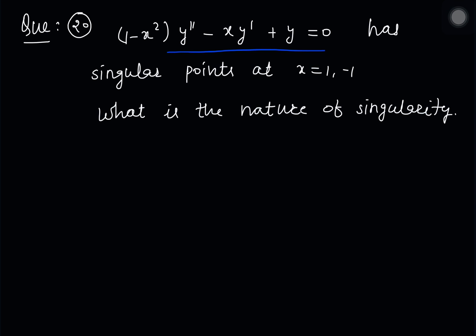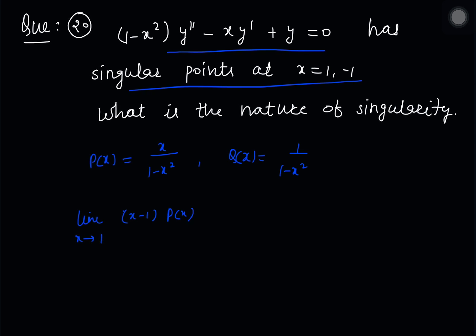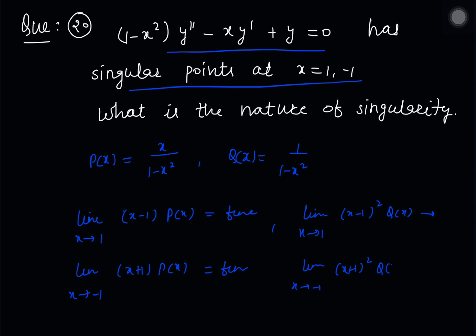We have a second-order differential equation where P(x) = x/(1−x²) and Q(x) = 1/(1−x²). The singular points are x = 1 and x = −1. To determine if they are regular or essential, we compute lim(x→1) (x−1)P(x) and lim(x→−1) (x+1)P(x). Both limits are finite, so both x = 1 and x = −1 are regular singular points.